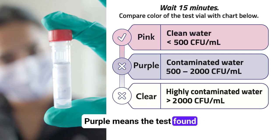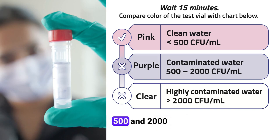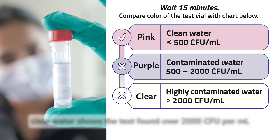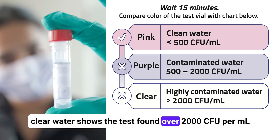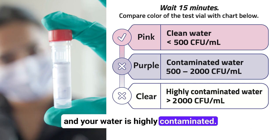Purple means the test found contaminates between 500 and 2000 CFU per milliliter. And clear water shows the test found over 2000 CFU per milliliter, and your water is highly contaminated.